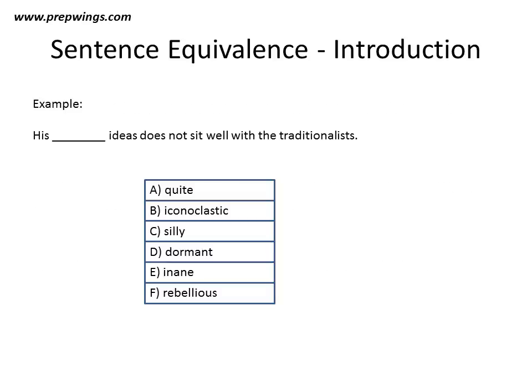An example is shown here. The sentence says: 'His blank ideas do not sit well with the traditionalists.' The options given to us are: quiet, iconoclastic, silly, dormant, inane, and rebellious.